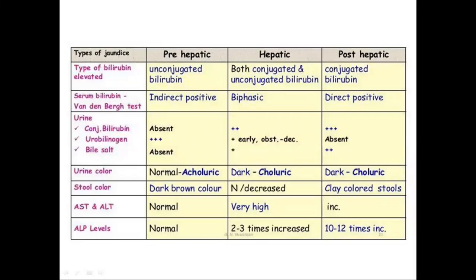A very important university question is the difference between the various types of jaundice — prehepatic, hepatic, and posthepatic. Regarding the type of bilirubin elevated: in prehepatic jaundice, because of excessive hemolysis, there will be more unconjugated bilirubin. In hepatic jaundice, both unconjugated and conjugated bilirubin are increased. And in posthepatic jaundice, only conjugated bilirubin will be raised because of obstruction in the flow of bile.